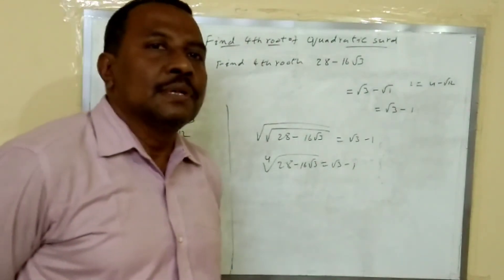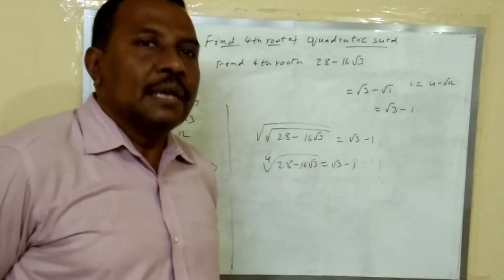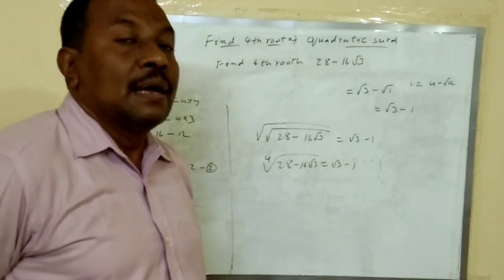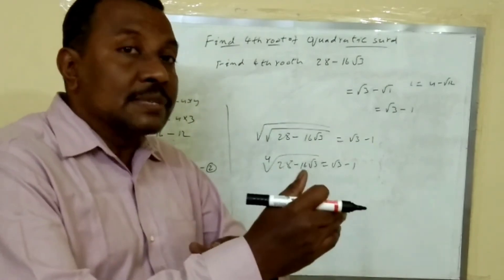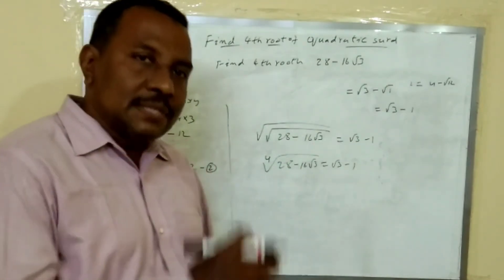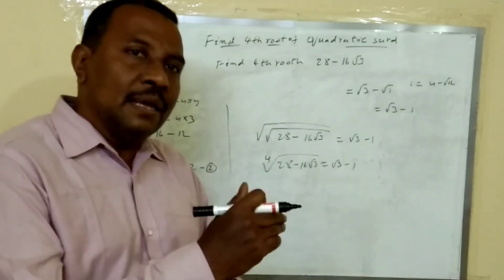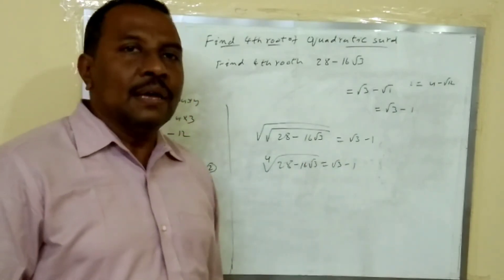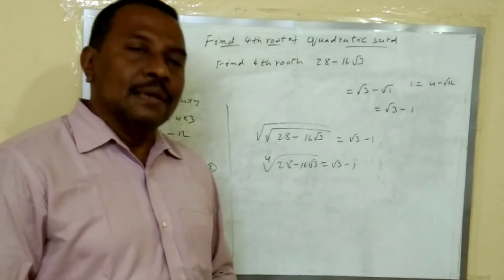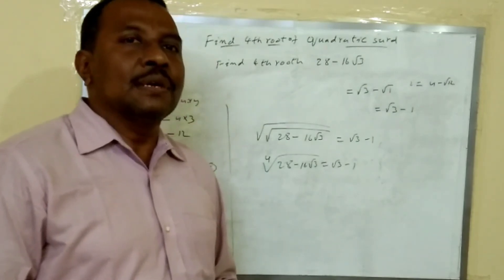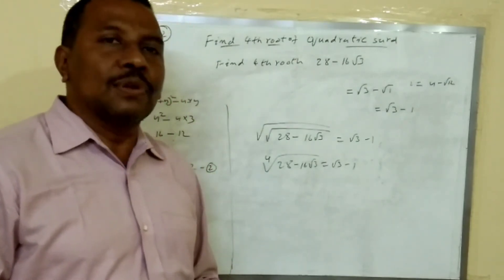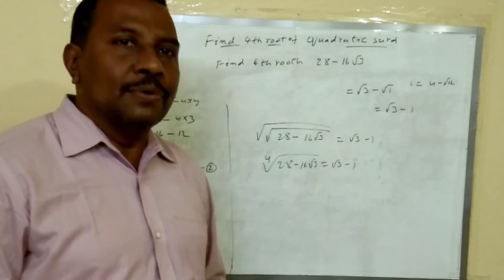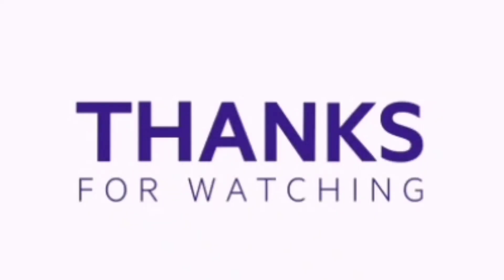So this is how you find the fourth root of a given quadratic surd. You find the square root twice: first find the square root of the given expression, then find the square root of that result, and that gives the fourth root. Thank you very much. I hope you understood. Keep subscribing to Pravin Tutorials. Thank you.